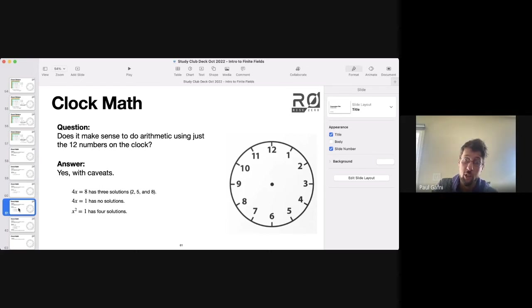x squared equals 1 actually has four solutions on this clock. So if you're finding the pacing to be a little bit slow and want an arithmetic question to pursue on the side while I'm talking, feel free to try to find the four values on the clock that have the property that their square is equal to 1.